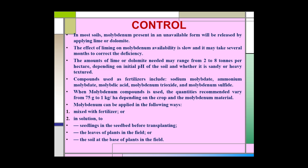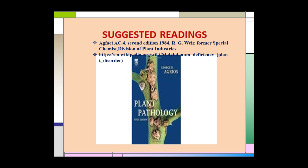Molybdenum can be applied in the following ways: mixed with fertilizer, applied in solution form to seedlings in the seed bed before transplanting, applied in solution form to the leaves of plants in the field, or applied to the soil at the base of the plant in the field. For further reading, the following links and the book Plant Pathology by George N. Agrios are suggested. Thank you for watching.